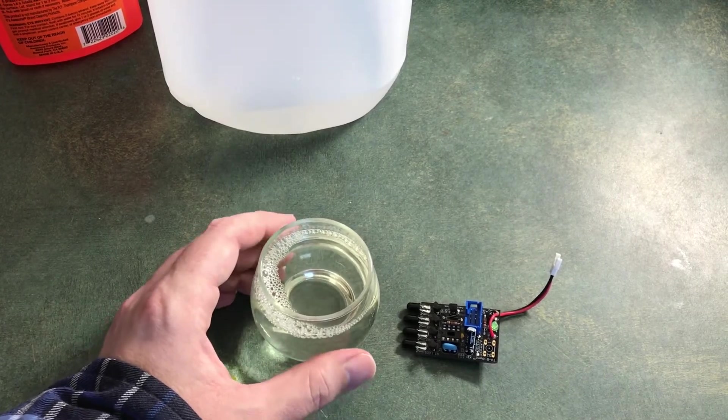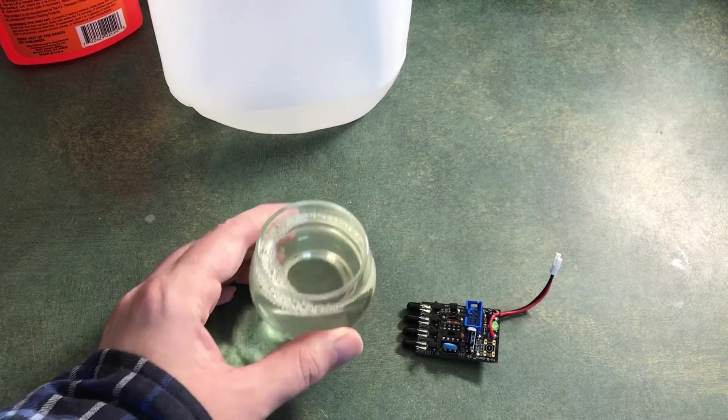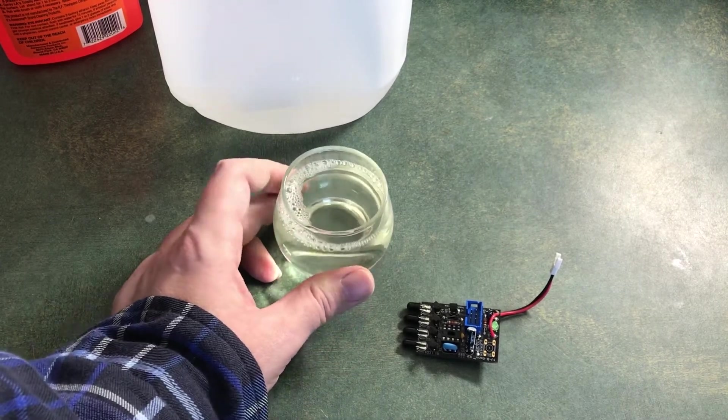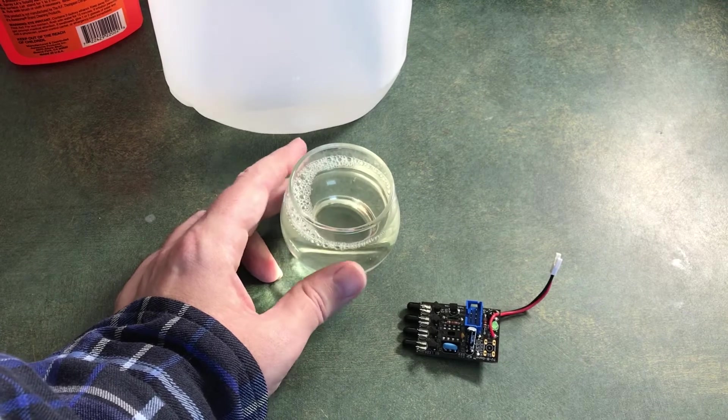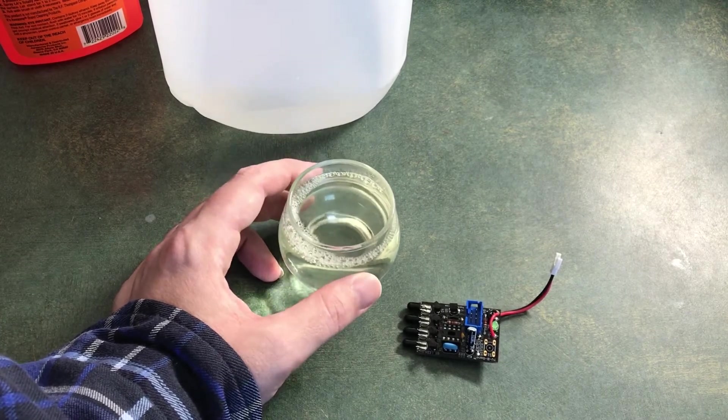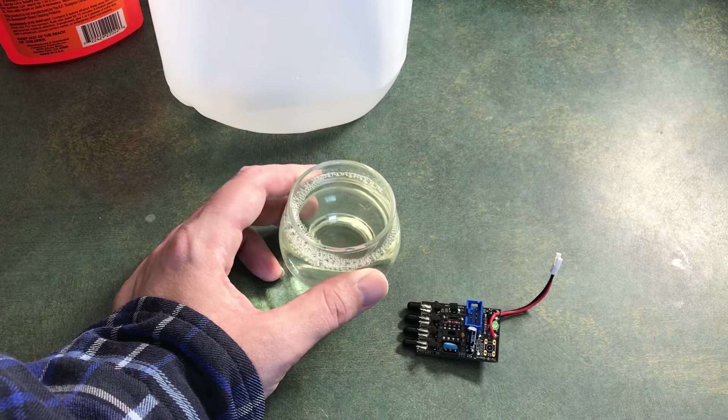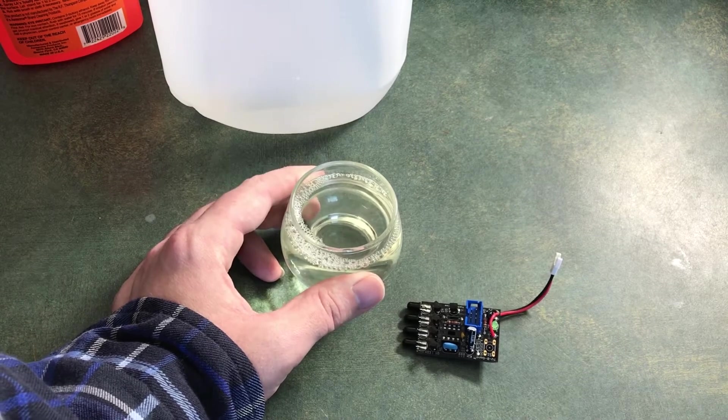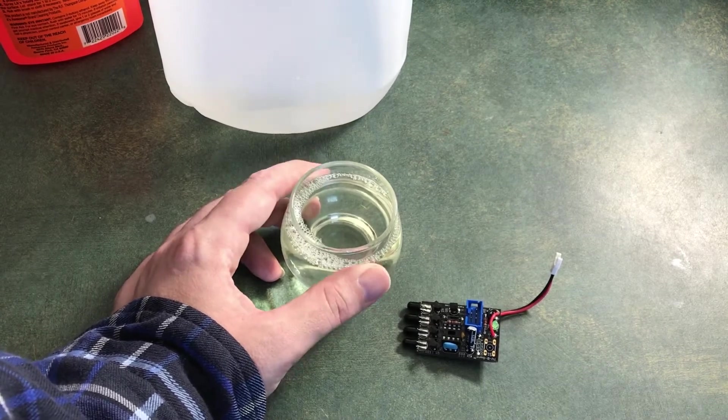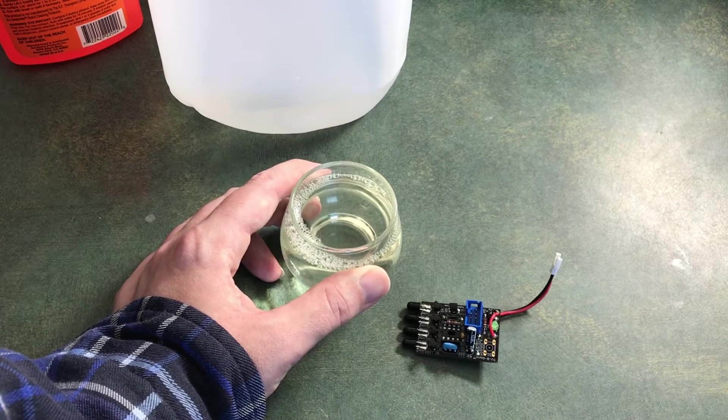So take this solution now and stick it in the microwave for 45 seconds to a minute, long enough to get it almost boiling. If you have a thermometer you want to get it to about 65 to 70 celsius.